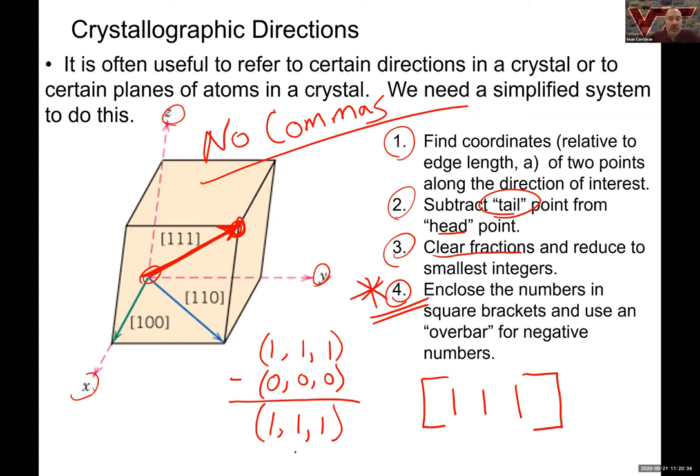So I'm going to write that nice and big. No commas when you're describing the indices, and that's also true for planes. Okay. Parentheses and commas are for coordinates just like you do in math. That's fine. But when you're describing a direction you do not use commas.